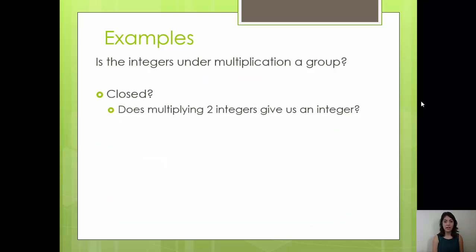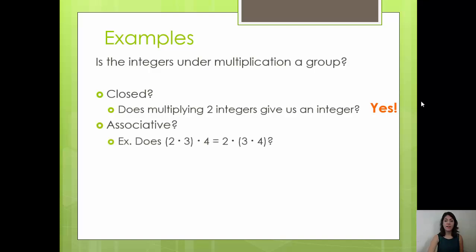Let's take a look at another example — the integers under multiplication. We ask the same questions. Is the set closed? Does multiplying two integers give us back an integer? Yes. Is the integers under multiplication associative? Yes, multiplication is associative when working with the integers.